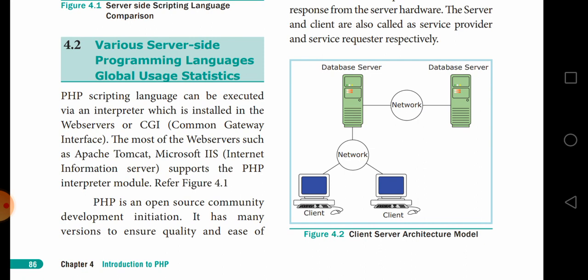According to global usage statistics, 79.9 percentage of websites are developed by PHP scripting languages. PHP scripting language can be executed by an interpreter, which is installed in web servers or CGI — Common Gateway Interface. Most web servers such as Apache, Tomcat, and Microsoft IIS — Internet Information Server — support the PHP interpreter module. This is an important 2-mark question.